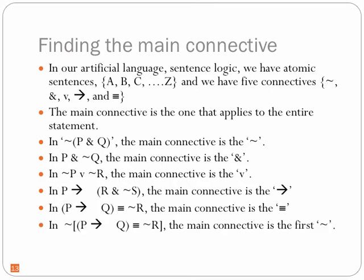For a more complex statement with four connectives — two negations, one arrow, one tri-bar — the main connective is the first negation, because that applies to the whole statement. Everything else applies only within parentheses or brackets. So we have a negated if-and-only-if statement, where the left side of the biconditional is an arrow statement and the right side is a negation.